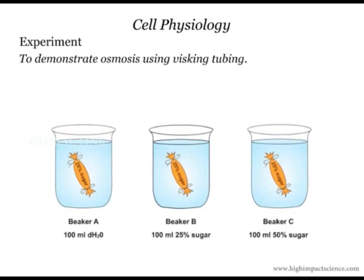This is what will happen. In beaker A, the content of the visking tubing is hypertonic relative to the distilled water in the beaker. Water will therefore move from the beaker across the membrane of the visking tubing by osmosis, increasing the content of the tubing and causing it to swell. In beaker B, the content of the visking tubing and the content of the beaker are isotonic, so there is no net movement of water and therefore no observable change. In beaker C, the content of the visking tubing is hypertonic relative to the content of the beaker. Water will therefore move out of the visking tubing by osmosis, causing its content to reduce and therefore it will shrink. This is osmosis.